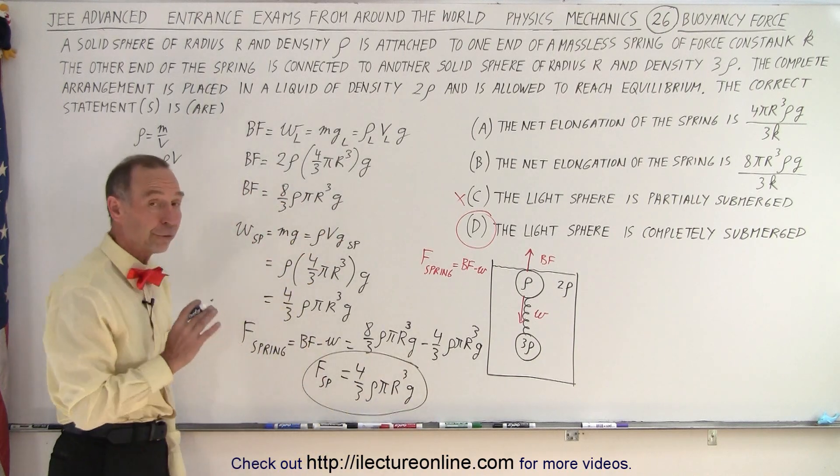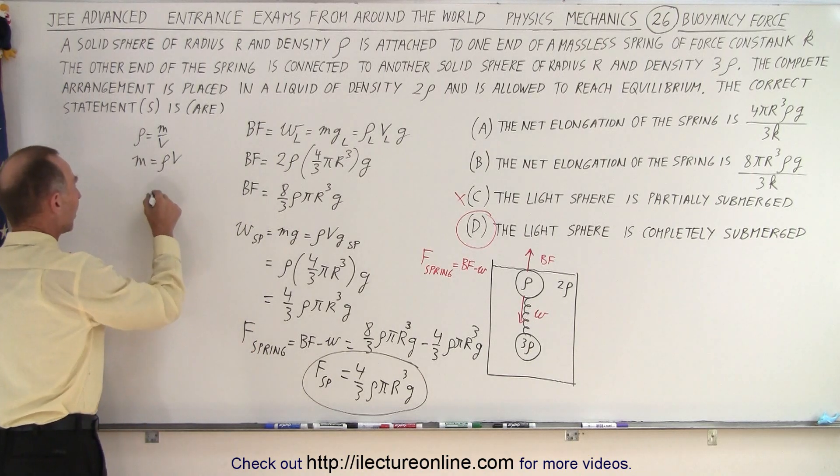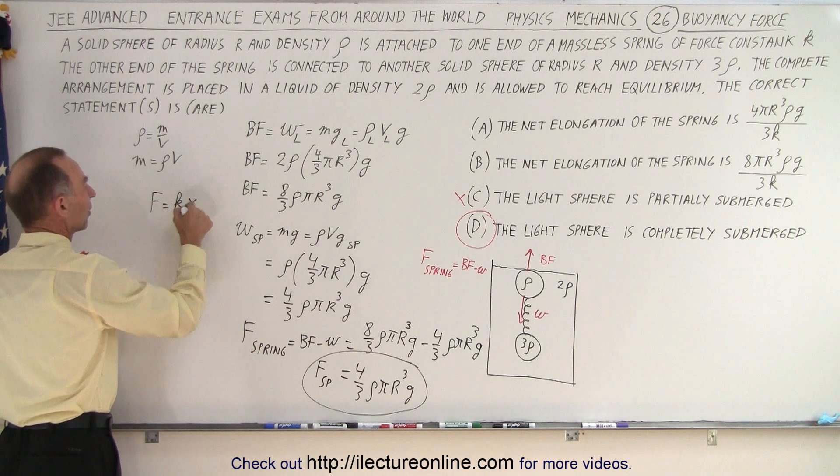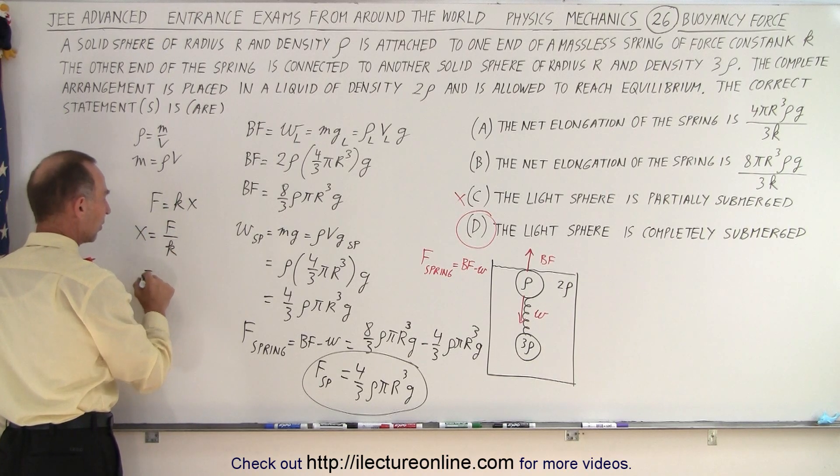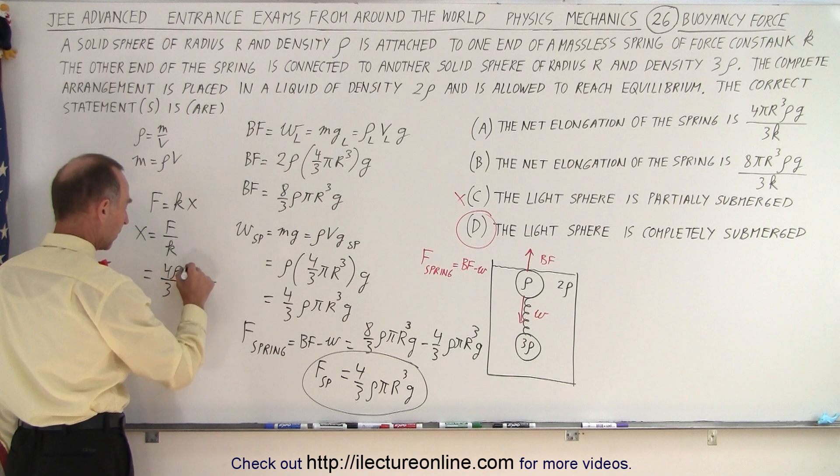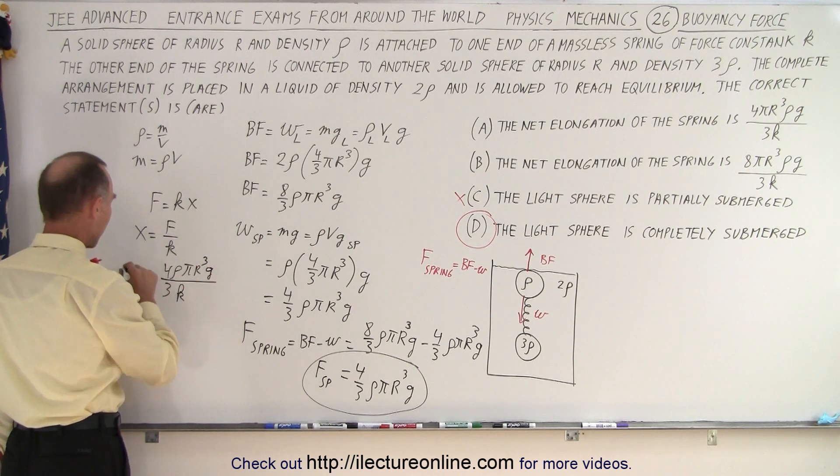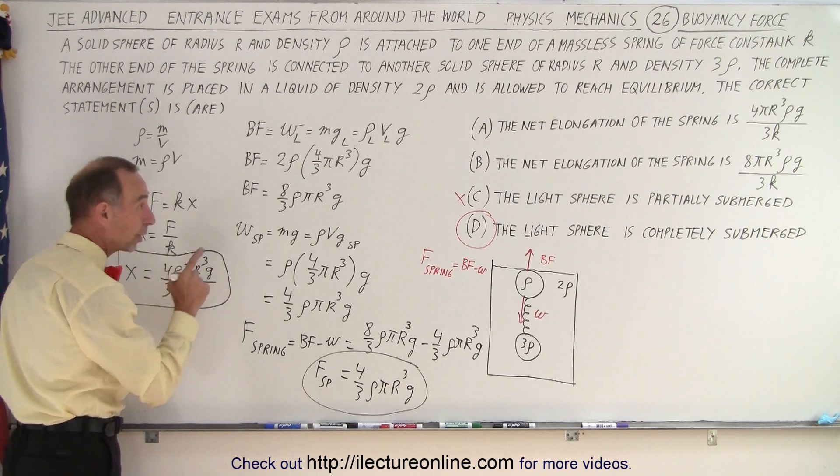Now they didn't ask for the force on the spring, they asked for the net elongation. So in that case, we know that f equals kx for a spring, so x equals f over k. So in this case, f would be 4 thirds density pi r cubed g divided by k, and that would be the elongation of the spring.